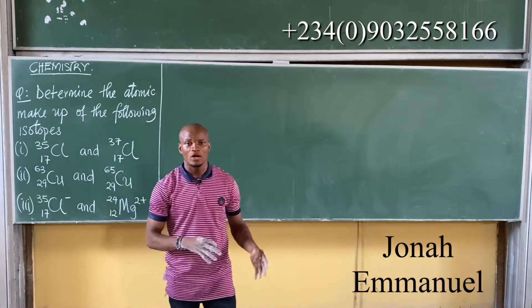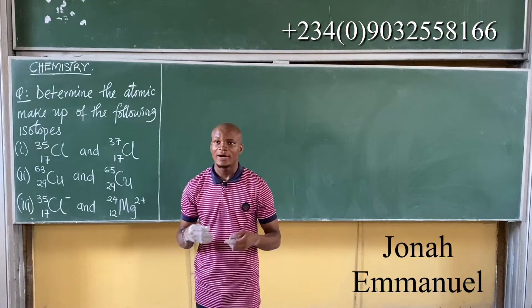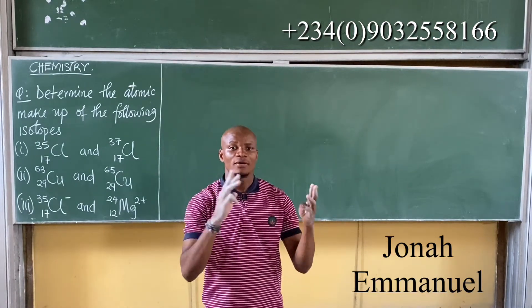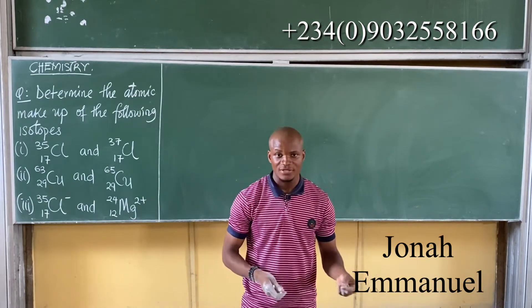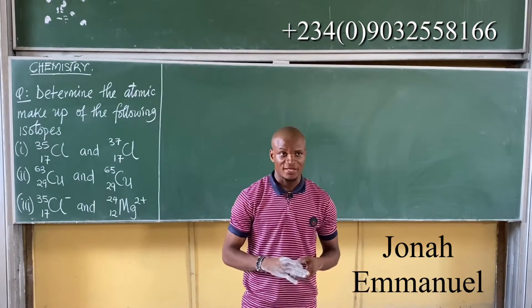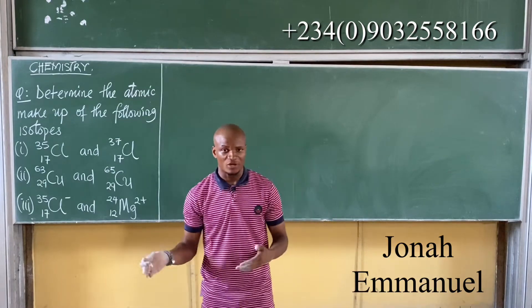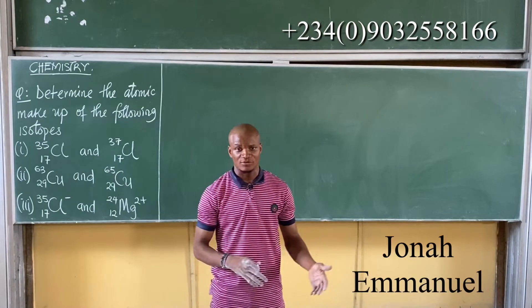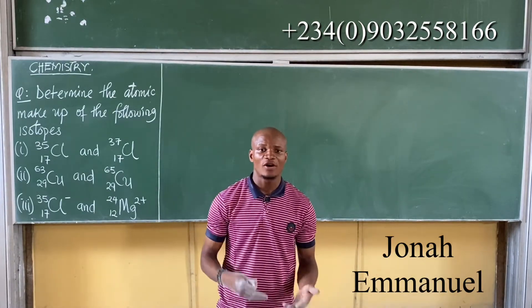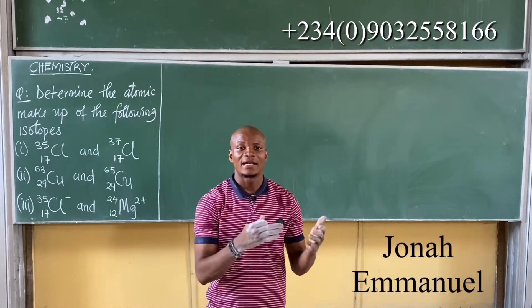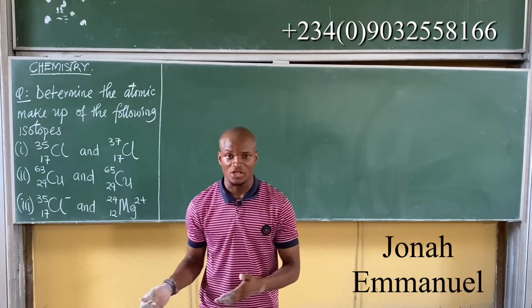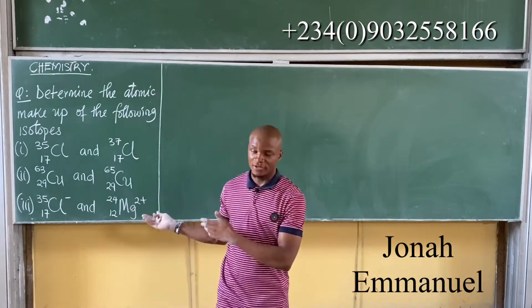When we say atomic makeup, what do we mean? An atom is made up of basically three particles: electrons, protons, and neutrons. So if they say identify the atomic makeup, it means identify the number of electrons, number of protons, and number of neutrons in an atom of the element, ion, or species given in the question.